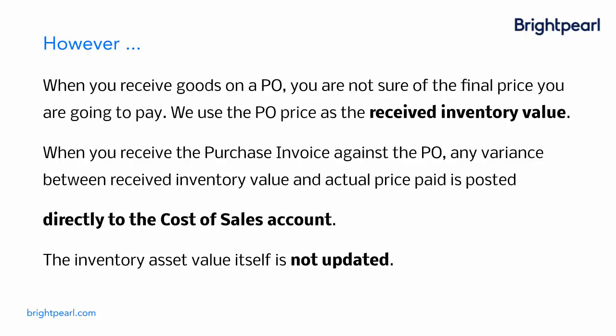We use the purchase order price when you receive the goods as the received inventory value. When you later receive the purchase invoice against the PO, any variance between the received inventory value and the actual price paid is posted directly to the cost of sales account on your general ledger. The inventory asset value itself is not updated at this point.